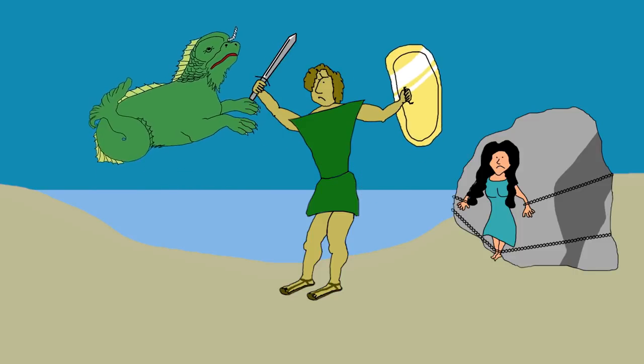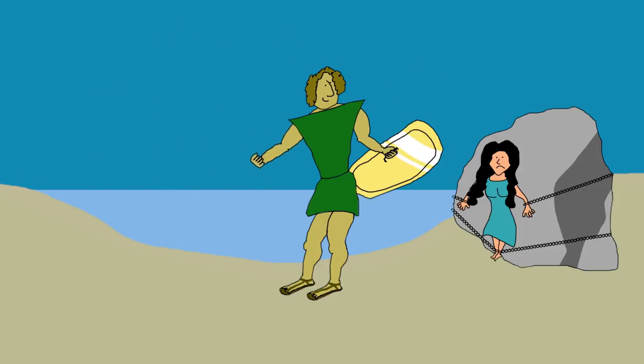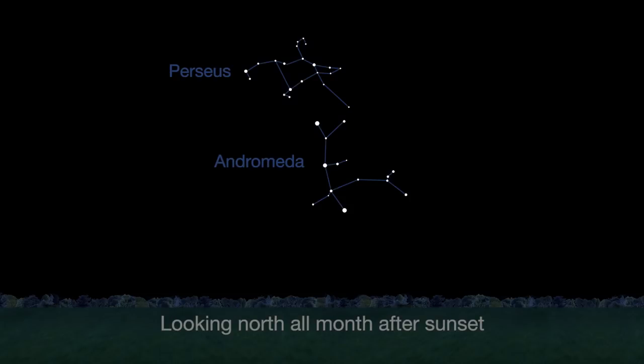After battling a sea serpent, he rescued her. As a reward, her parents Cepheus and Cassiopeia allowed Perseus to marry Andromeda.